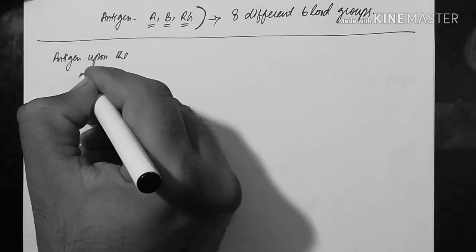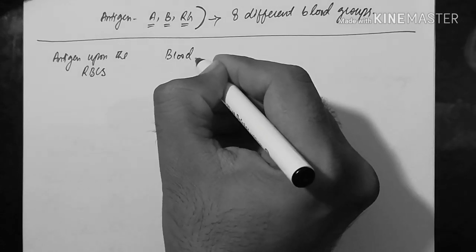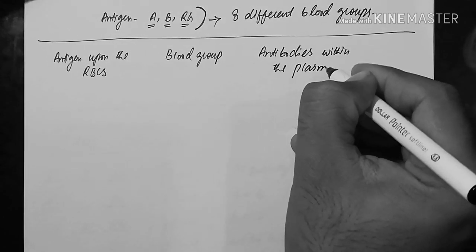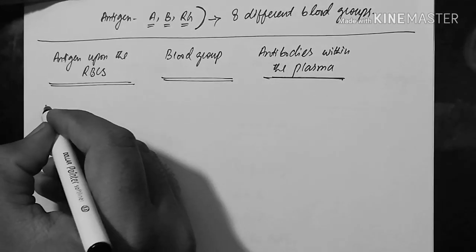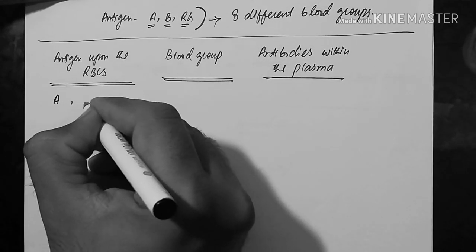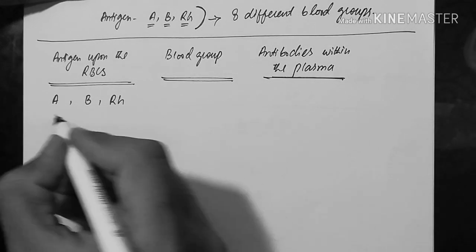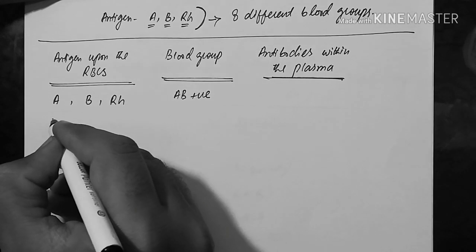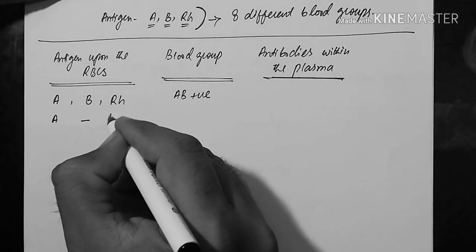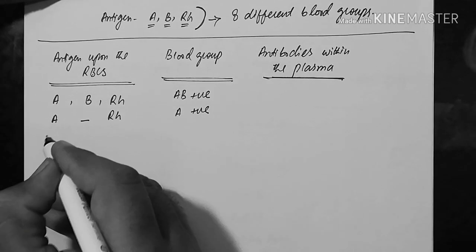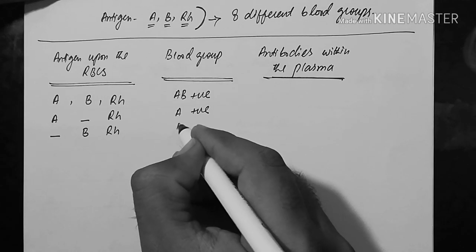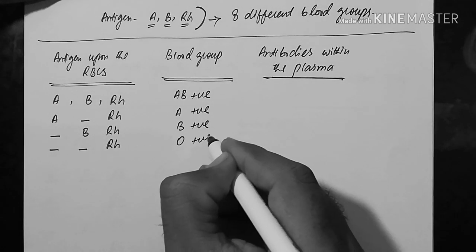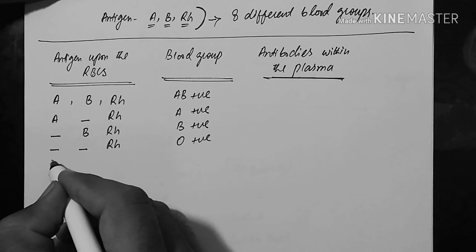Now let's explain the ABO and Rh blood group system. First, we are writing different combinations of antigens upon the RBCs, then the name of the blood group, and then the antibodies present within the plasma of the same individual. A person with antigen A, antigen B, and antigen Rh has a blood group of AB positive — the positive sign is for Rh. A person with A and Rh has blood group A positive. With B and Rh antigens on RBCs, the blood group is B positive. With only Rh antigen and no A or B, the blood group is O positive.